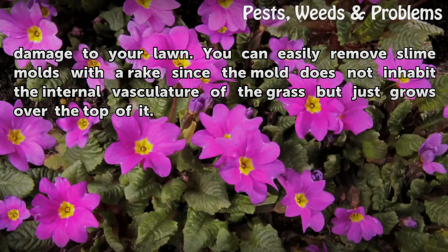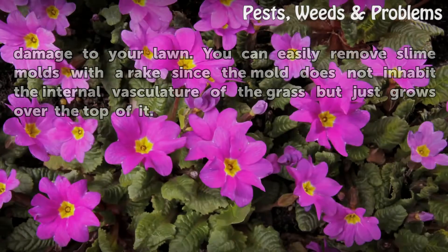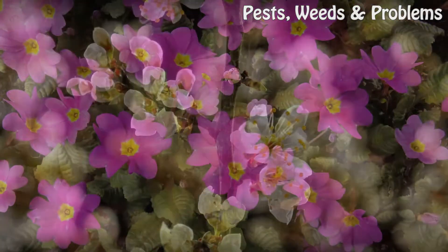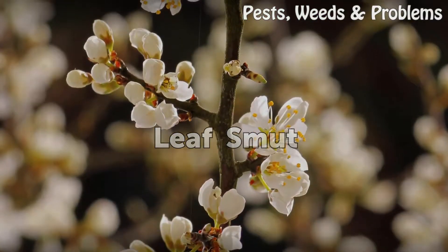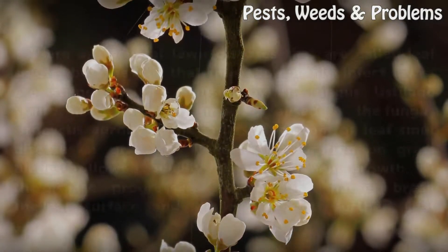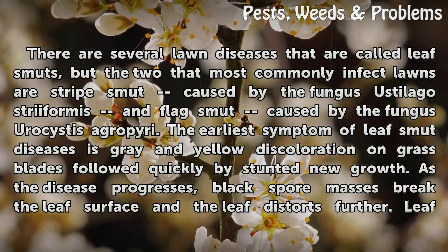You can easily remove slime molds with a rake, since the mold does not inhabit the internal vasculature of the grass but just grows over the top of it.